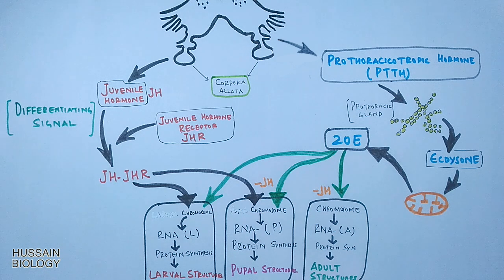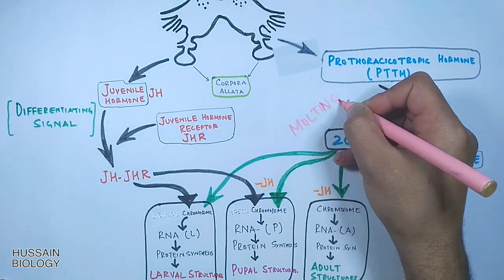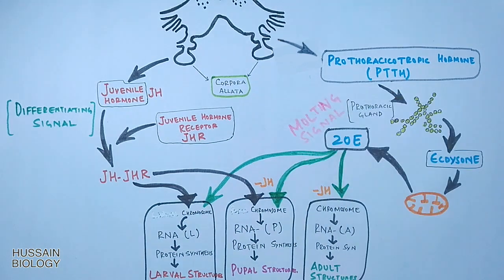So PTTH-mediated metamorphosis forms the molting signal in insects. This concludes the hormonal control of insect metamorphosis.